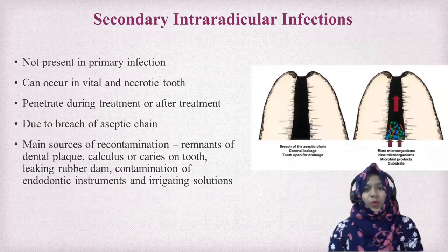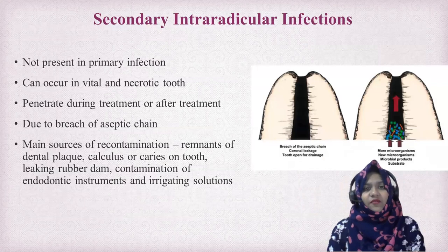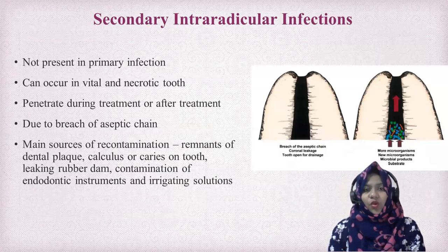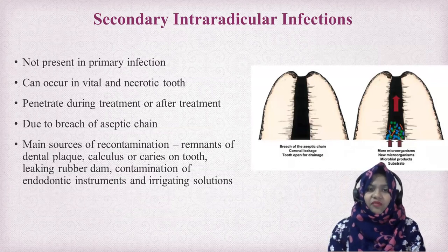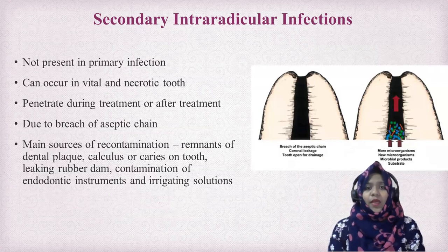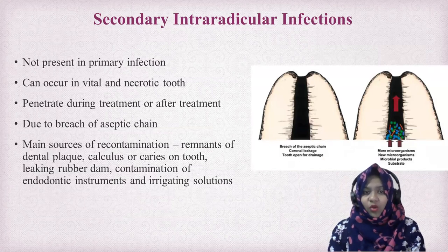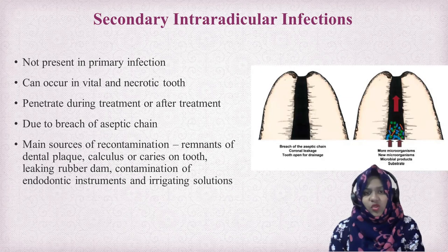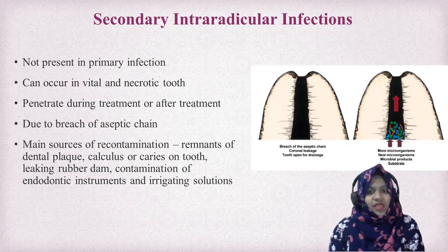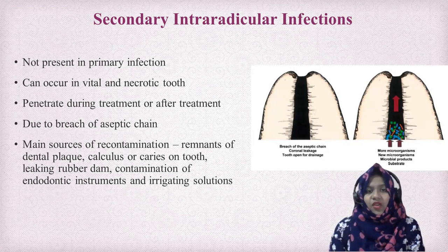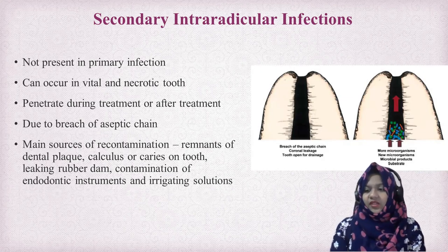The third mechanism is secondary intraradicular infections. This occurs in vital as well as necrotic teeth. It penetrates during or after treatment. It occurs when the aseptic chain is not followed, causing a breach. The main sources of recontamination are remnants of plaque or calculus, caries on the tooth, leaking rubber dam, contaminated instruments, and irrigating solutions.